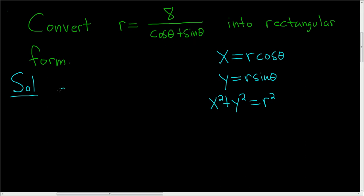So if we do that, on the left-hand side, we get cosine theta plus sine theta times r. And on the right-hand side, we have 8 over cosine theta plus sine theta times cosine theta plus sine theta.